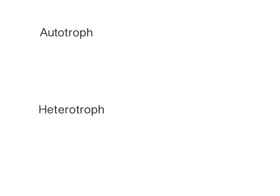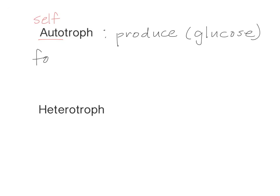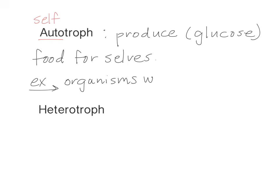After discussing photosynthesis and cellular respiration, you should see there are two types of organisms on the planet depending on how they get their food. The first are autotrophs — 'auto' meaning self. These are organisms like plants that produce their own food, that food being glucose. An example of this is anything that goes through photosynthesis.